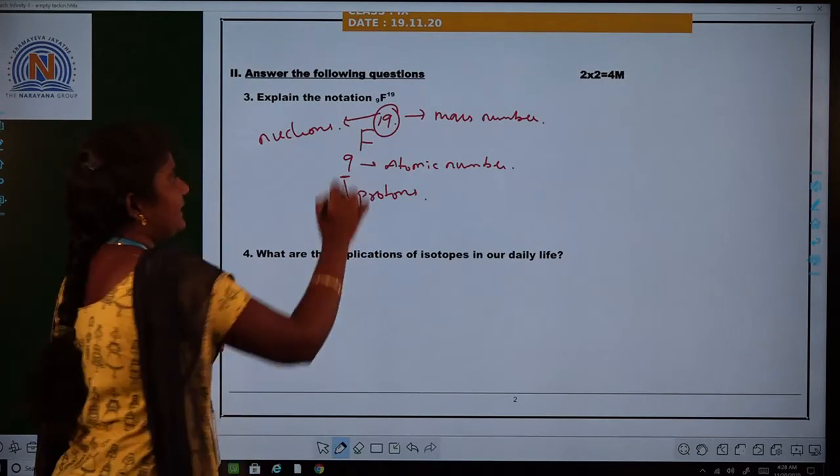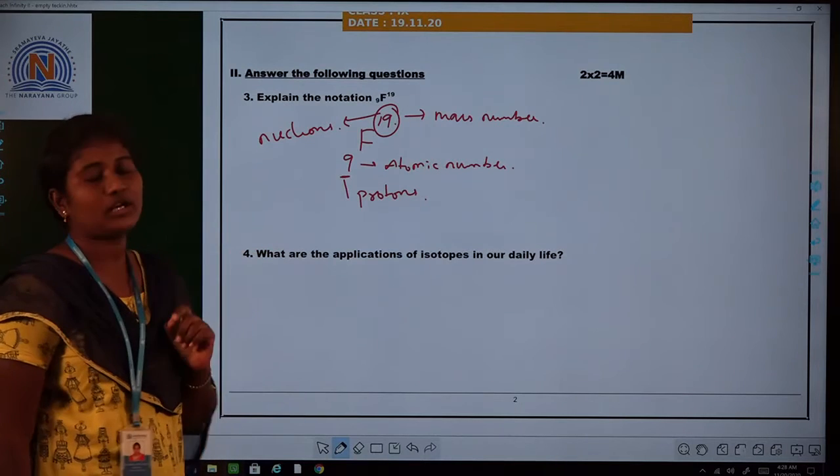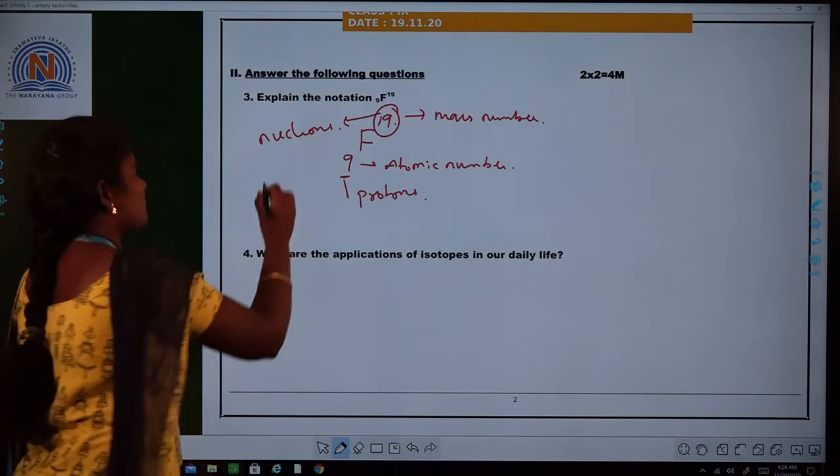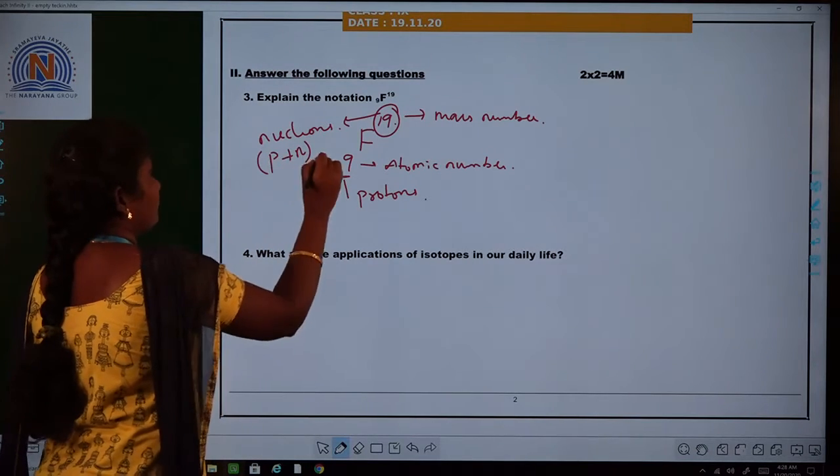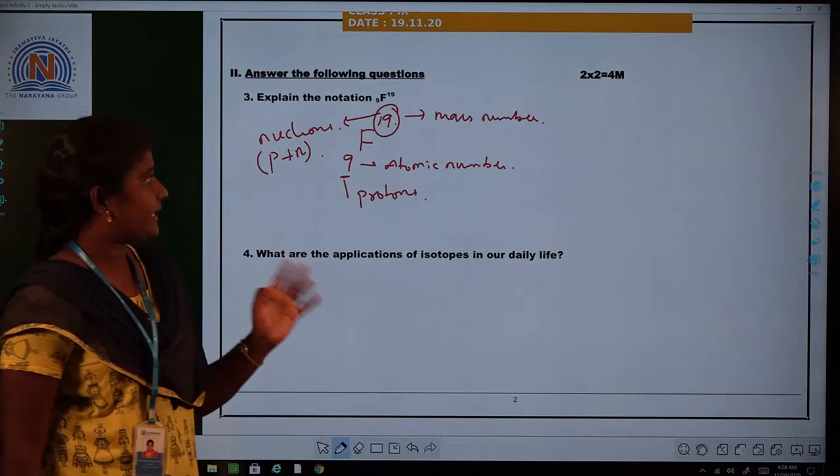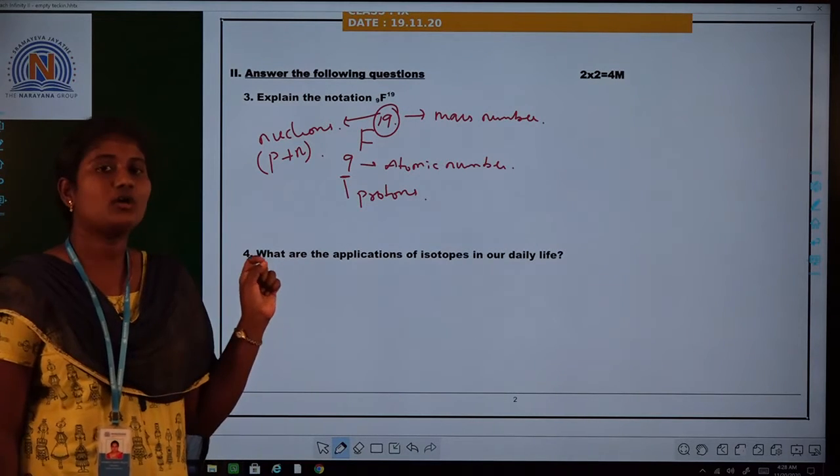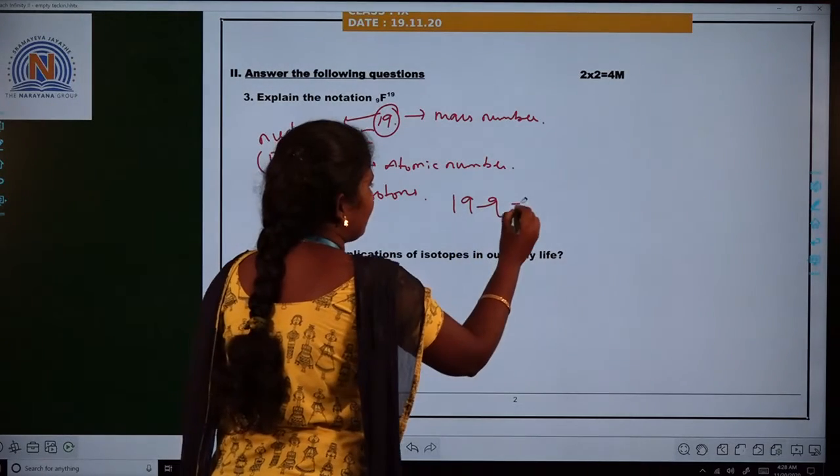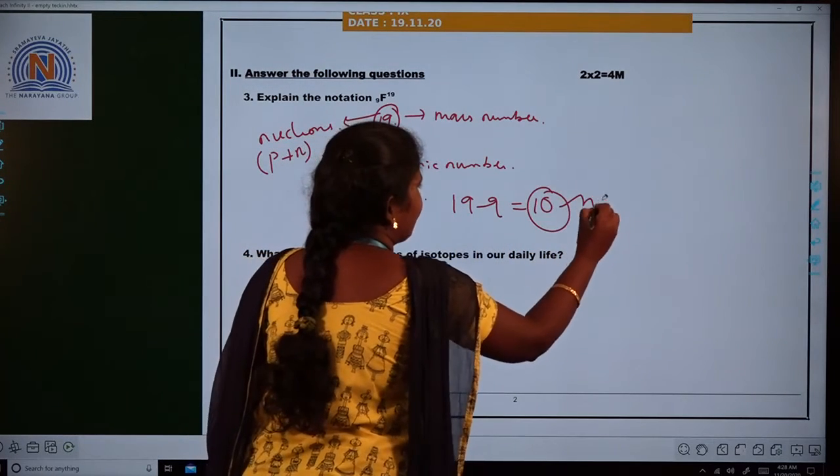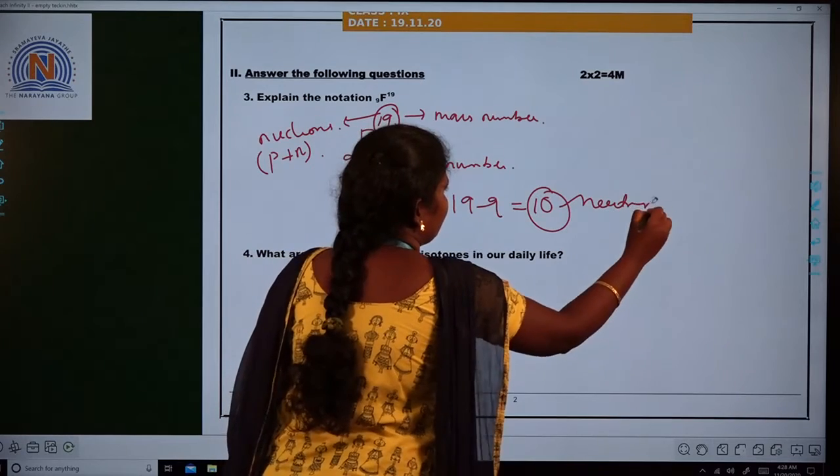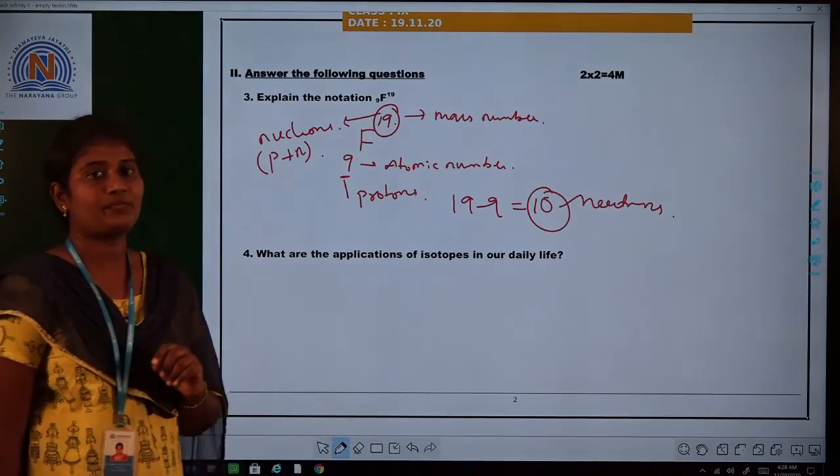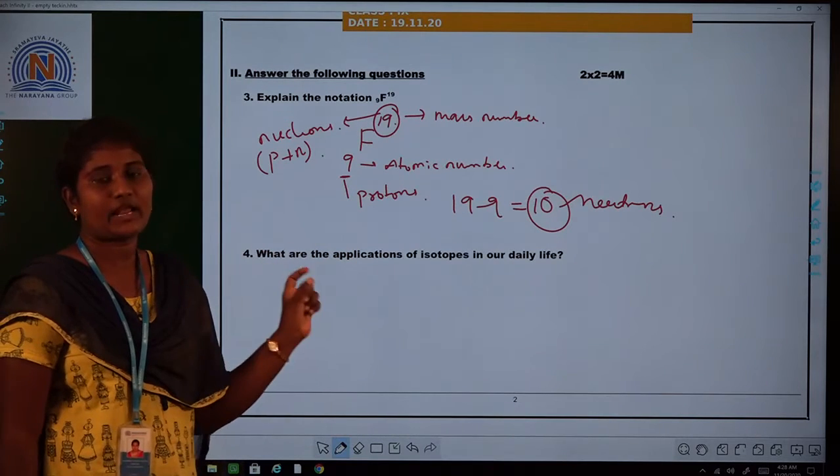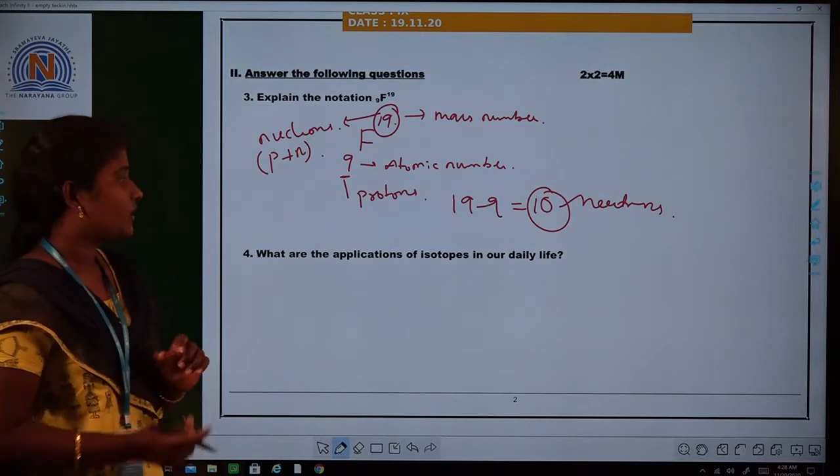So here 9 indicates the number of protons present in fluorine. The 19 indicates nucleons, which is the number of protons and neutrons. To find the number of neutrons in fluorine, we take 19 minus 9 equals 10. So 10 neutrons are present in the fluorine atom. Mass number minus atomic number gives us the number of neutrons.